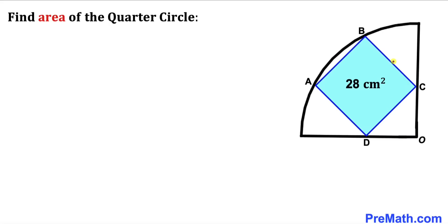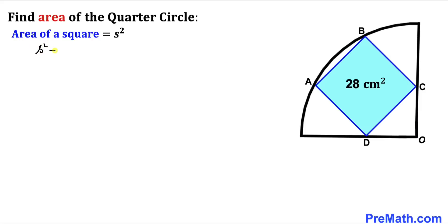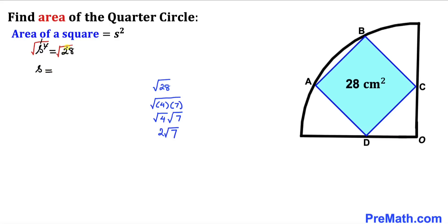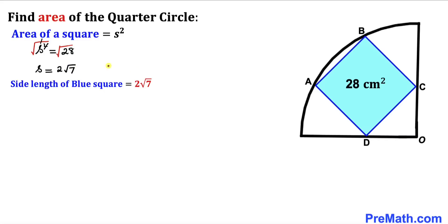Let's focus on the blue square ABCD whose area is 28. Recalling the area of a square formula: Area = s², where s is the side length. In our case s² = 28 cm². Taking the square root of both sides, the square and square root undo each other, so s = √28 = 2√7. The side length of the blue square is 2√7.